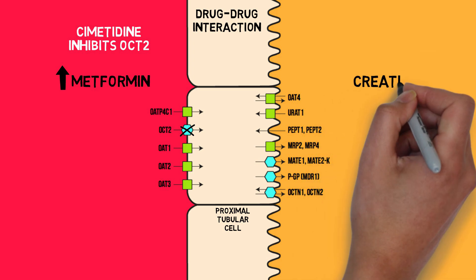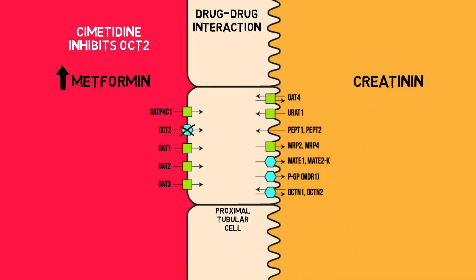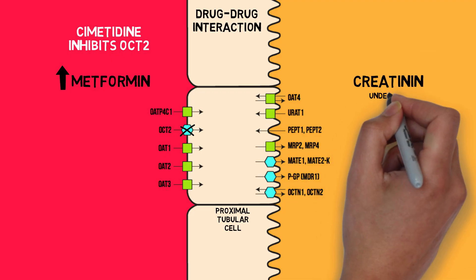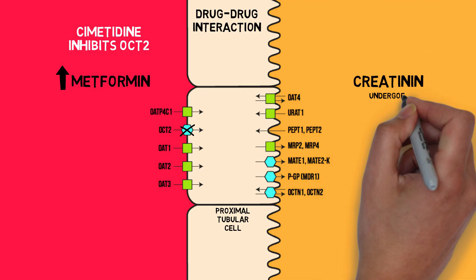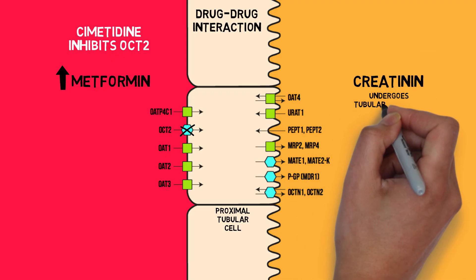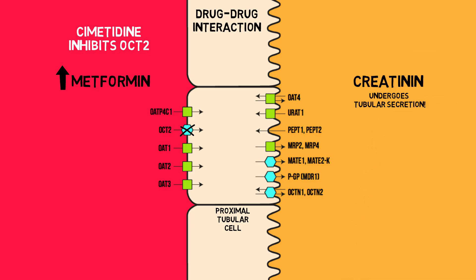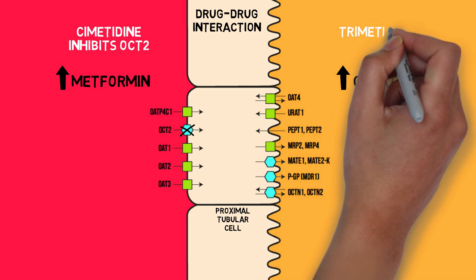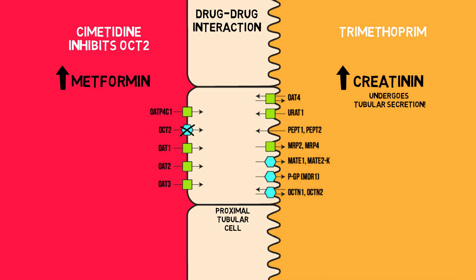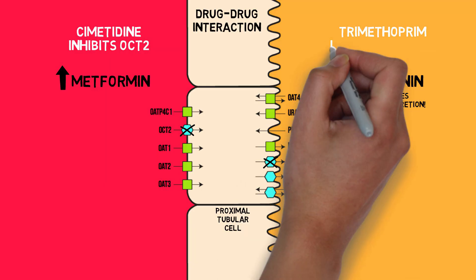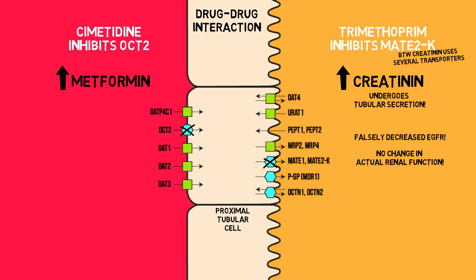By the way, fun fact: though used for the calculation of glomerular filtration rate, creatinine itself undergoes tubular secretion for about 10-20%. This amount can increase up to 50% in people with renal failure. This is why you see an increase in serum creatinine levels when you prescribe trimethoprim, without actually causing a decrease in GFR.